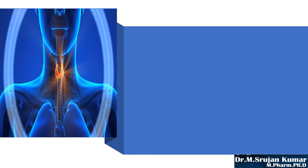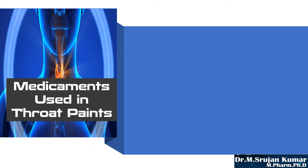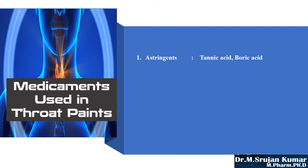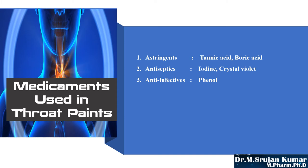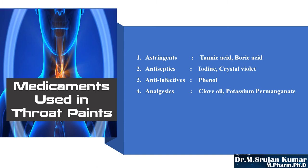Next, moving on to the medications used in throat paints — what are all the medications that can be incorporated? First, astringents — for example, tannic acid and boric acid. Second, antiseptics — iodine and crystal violet as examples. Third, anti-infectives — phenol as an example. Fourth, analgesics — clove oil and potassium permanganate as examples. These are some of the medications that can be incorporated into throat paint formulations.